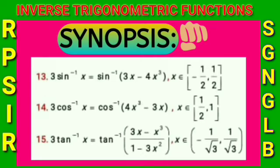Thirteenth point: 3sin⁻¹(x) = sin⁻¹(3x - 4x³), where x belongs to [-1/2, 1/2].